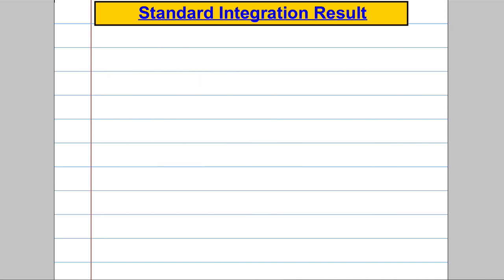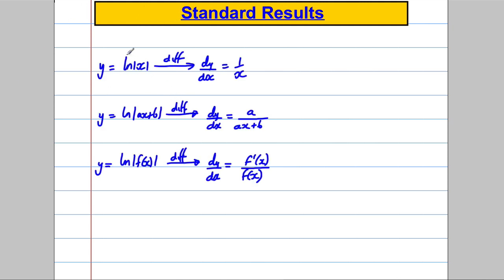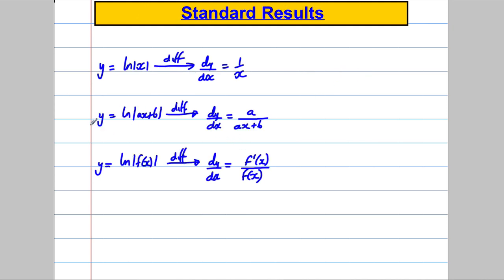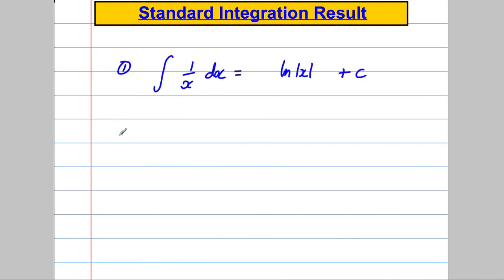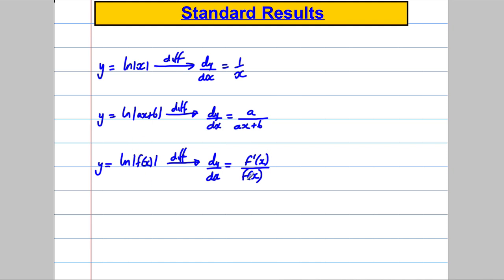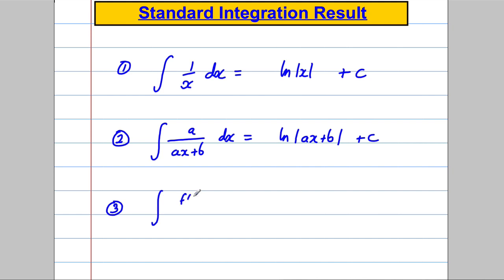And the most general case: if we have y is equal to the natural log of any function of x — not just x or a linear combination of x — and we differentiate this, we get that dy by dx would be equal to f-dashed x divided by f of x. So because I know when I differentiate ln x I get 1 over x, my first integration result is: if I integrate 1 over x with respect to x, I get the natural logarithm of x plus a constant. Because I know that when I differentiate ln(ax + b) I get a over ax plus b, if I integrate a over ax plus b with respect to x, I get ln of ax plus b plus a constant. And lastly, if I integrate f-dashed x divided by f of x with respect to x, I get ln of f of x plus c.